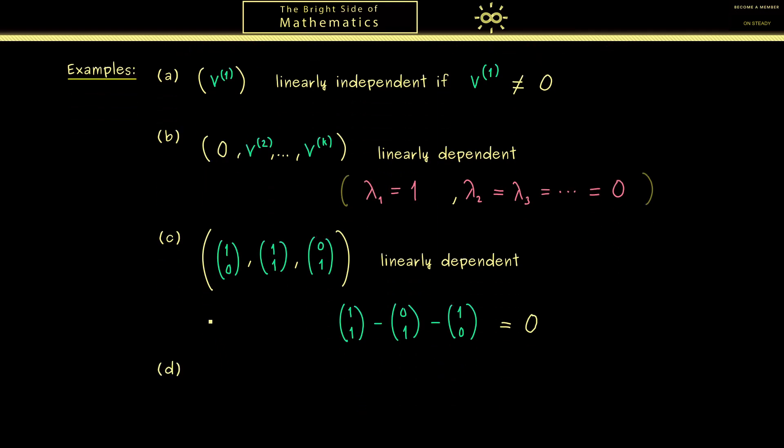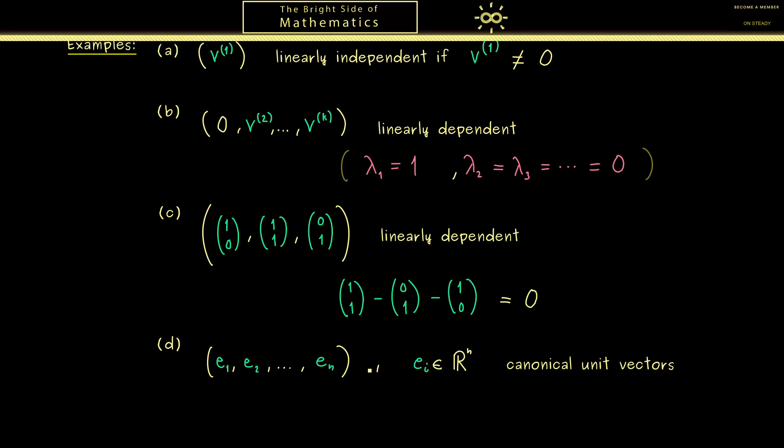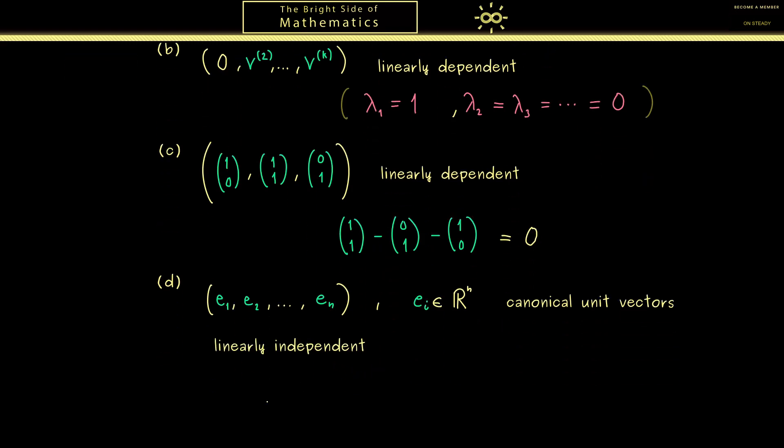However, before we do that, let's first look at another general example. There let's consider the canonical unit vectors e_1, e_2 and so on in R^n. And the family should consist of all of them, so we have a family with n vectors. Here I can tell you this is one of the most important examples, because it's the canonical example of a linearly independent family of vectors.